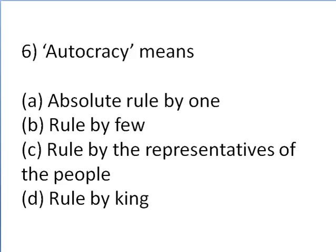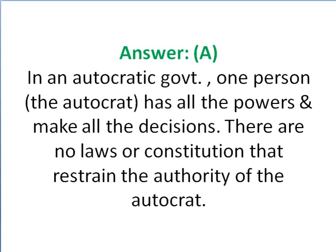Moving towards the sixth question: Autocracy means — first option absolute rule by one, second option rule by few, third option rule by the representatives of the people, fourth option rule by the king. Autocracy is a system of government by one person with absolute power. In an autocratic government, one person — the autocrat — has all the powers and makes all the decisions. There are no laws or constitution that restrain the authority of the autocrat. So option one is correct.